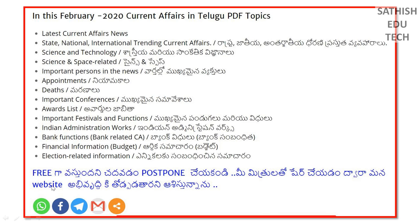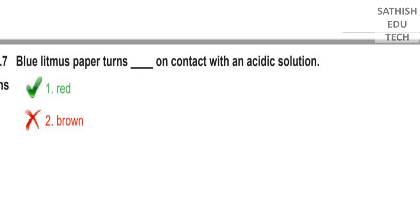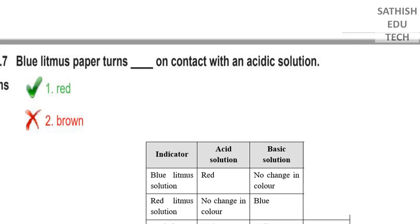So first, we have a blue litmus paper. We have a red color. So we have 4 indicators. We have 4 indicators.